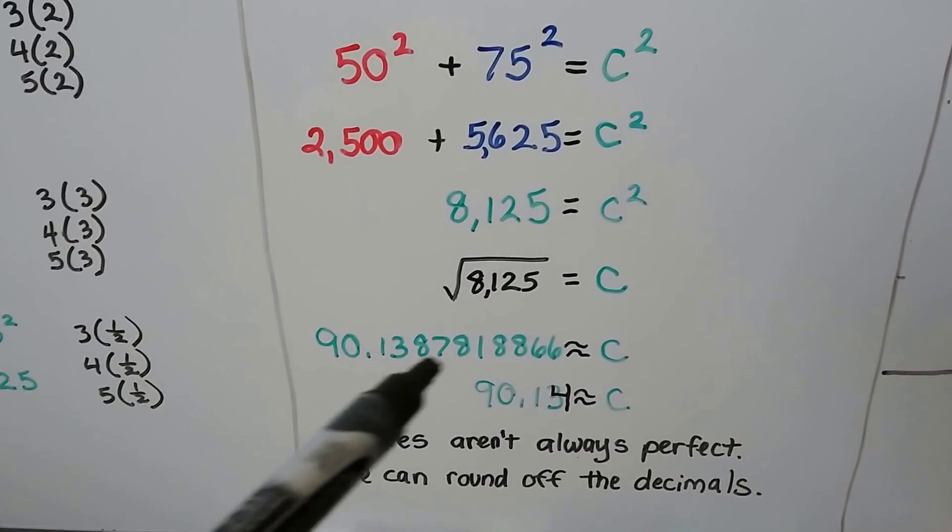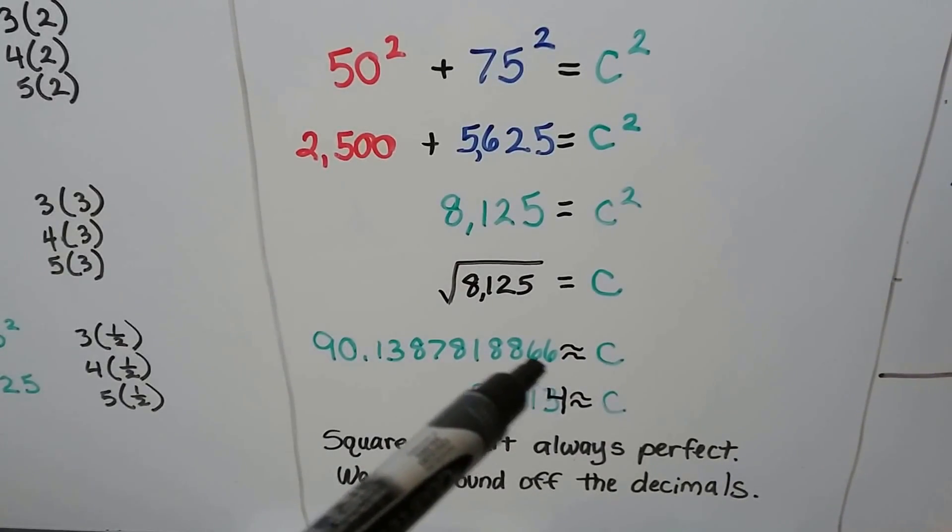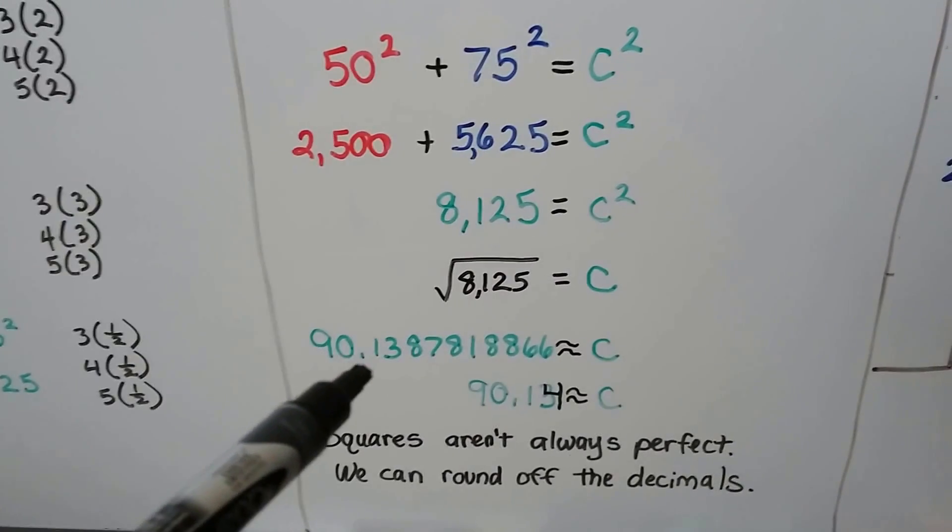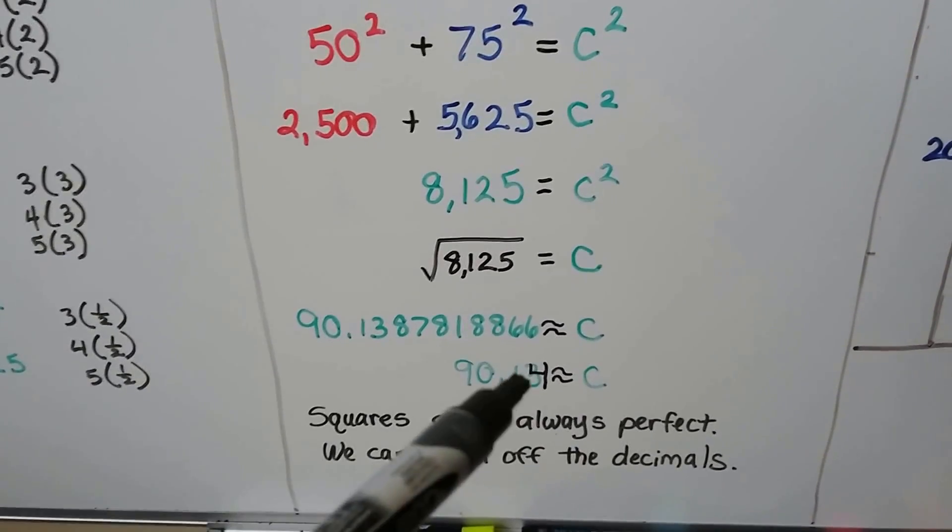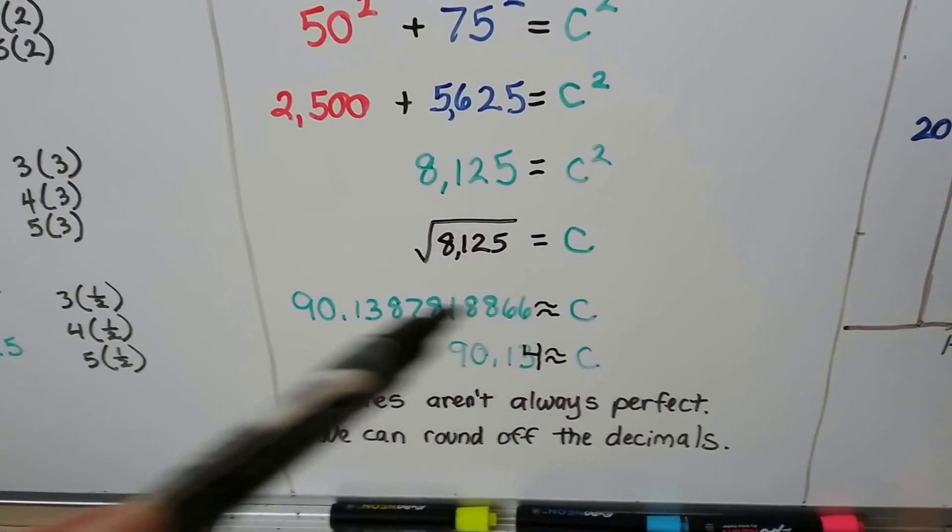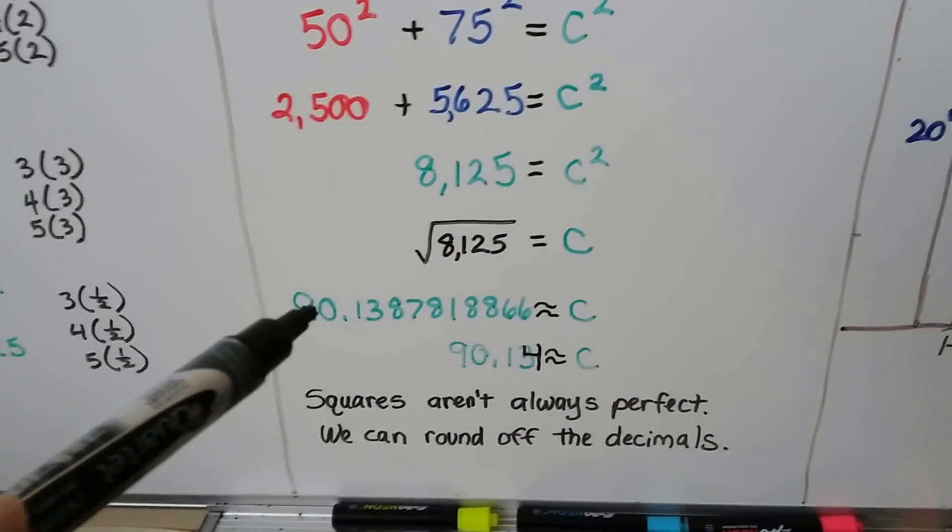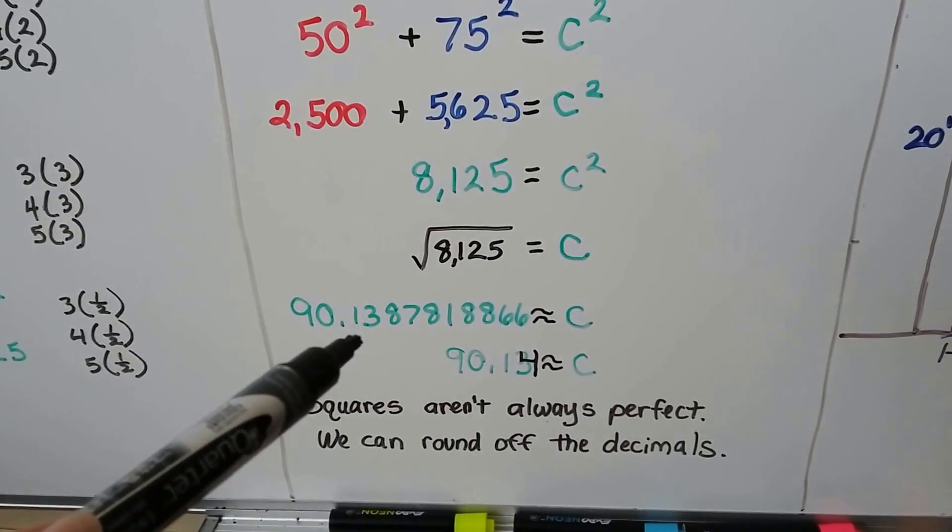And we get this nice long decimal number. This is about as close as we're going to get. So, we have 90.13. We can also say 90.14 if we round it up. So, squares aren't always perfect, but we can round off the decimal when it's really long like that to get it close. We could even just say 90.1, because the 3 tells the 1 to stay the same in rounding.